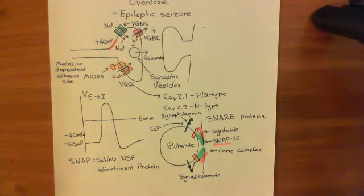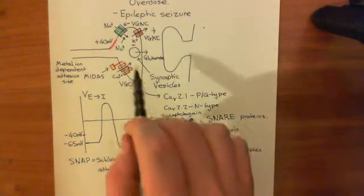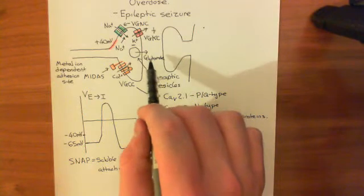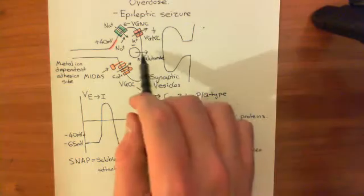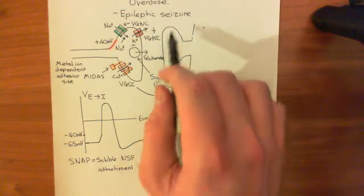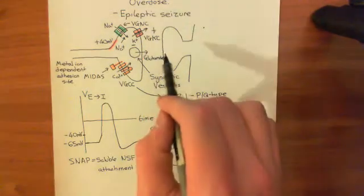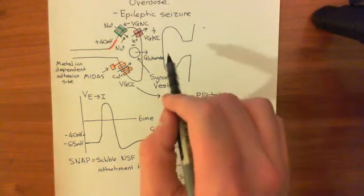The point we are at with our glutamatergic synaptic transmission is that we've released the glutamate into the synaptic cleft. The glutamate is going to diffuse across the synaptic cleft to our postsynaptic membrane, where we're going to have receptors for glutamate.